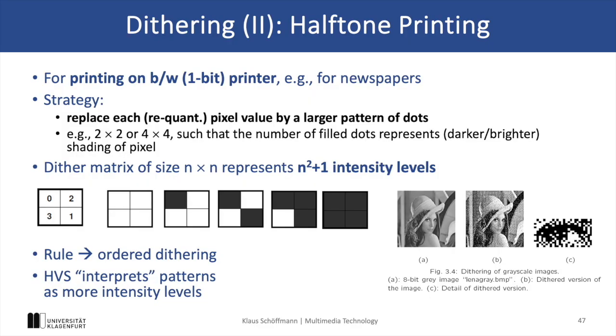The main idea of dithering is to replace each pixel value with a pattern of dots. The size, density, and pattern of these dots correspond to the number of colors we want to approximate. A darker pixel value is represented by a higher dot density, while a lighter pixel is represented by fewer dots only. You can see the five patterns for 2×2 dithering on the slide. We still use just black and white, but increase the number of perceived colors by the human visual system because we use different densities.